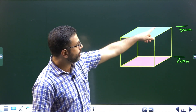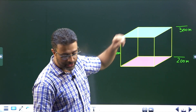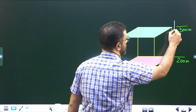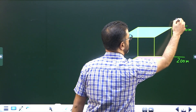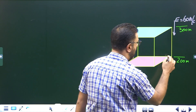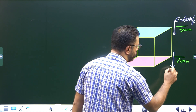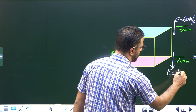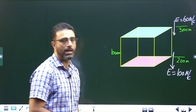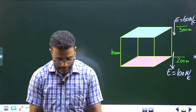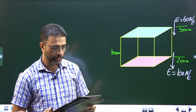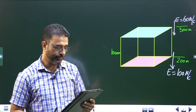At an altitude of 300 meters, the field is 60 newton per coulomb. And at an altitude of 200 meters, the field is 100 newton per coulomb. At both places, the field is directed vertically downward.